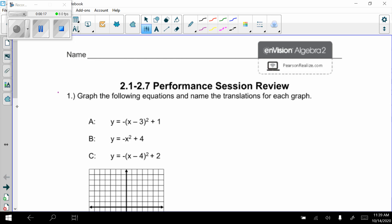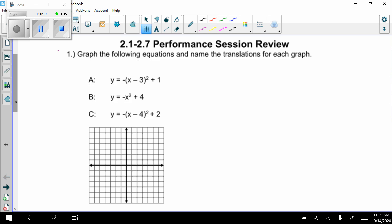So graph A, y equals negative x minus 3 quantity squared plus 1. So my transformations, I see I have a reflection. x minus 3, so that means that moves to the right 3. And the plus 1, up 1.